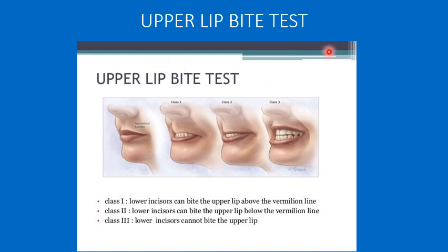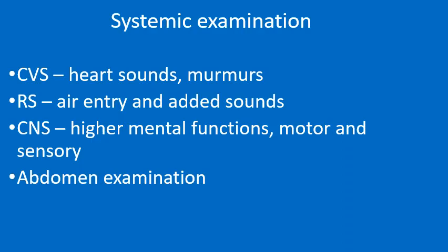In the upper lip bite test, the patient is asked to bite the upper lip with the lower incisors. If the patient is able to bite the upper lip above the vermilion line, it is class 1. If able to bite below the vermilion line, it is class 2. If unable to bite the upper lip at all, it is class 3 — meaning the lower incisors cannot bite the upper lip. Class 2 and class 3 indicate difficult intubation.